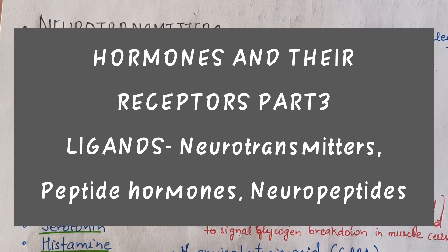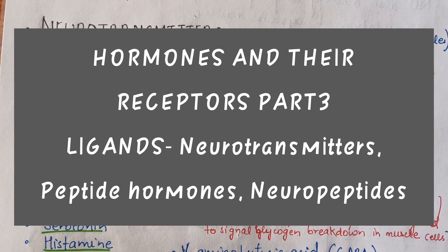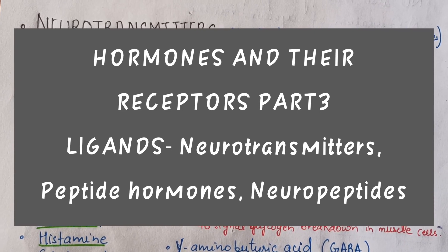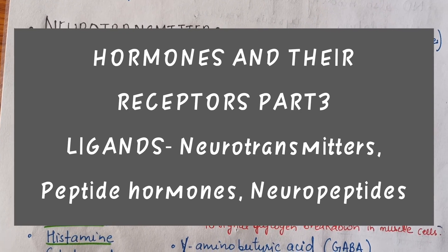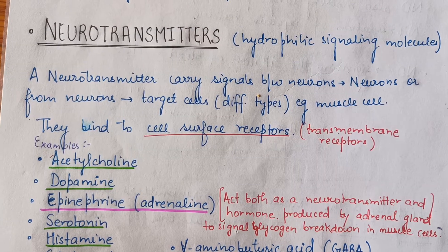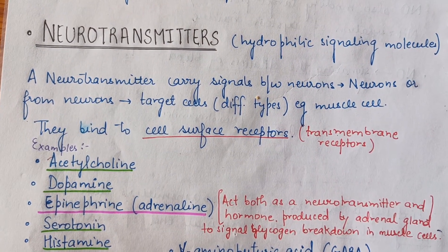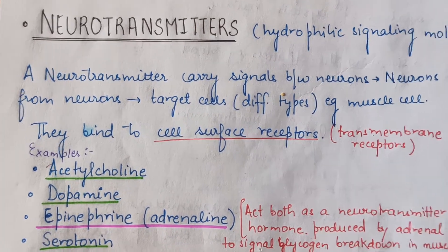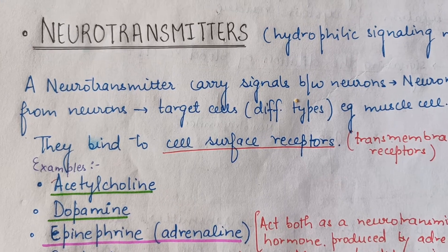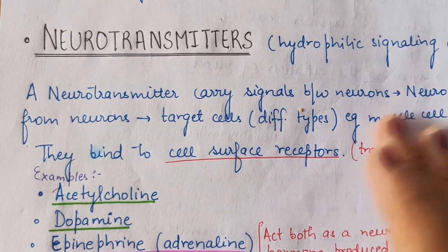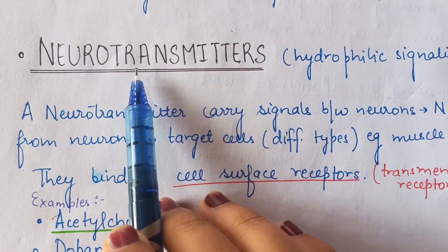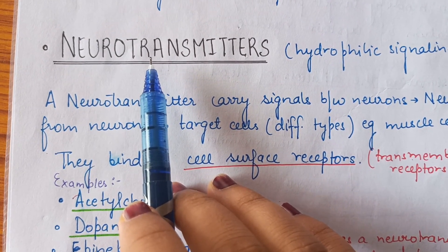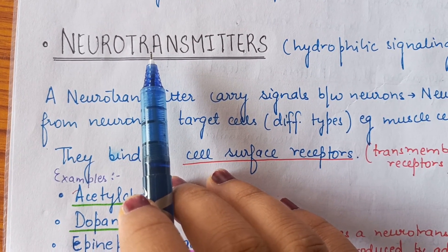In this video we are going to study about neurotransmitters. This is a continuation video on the topic of hormones and their receptors. In the previous videos we covered steroid hormones, nitric oxide and carbon monoxide gases which act as ligands. The neurotransmitter here is acting as a ligand or signaling molecule, and its receptor is the transmembrane receptor or plasma membrane receptor present on the surface of the plasma membrane.